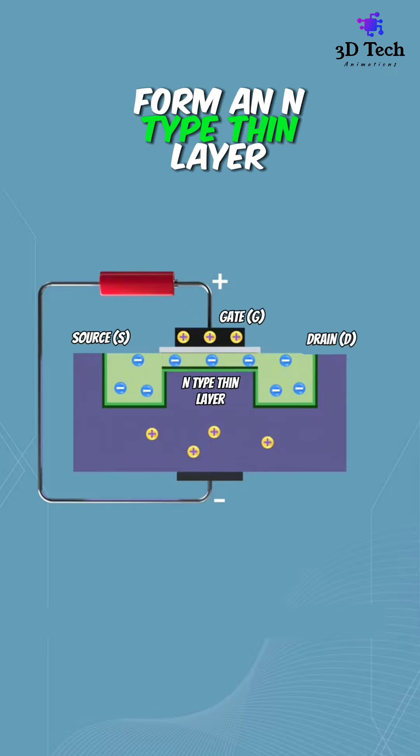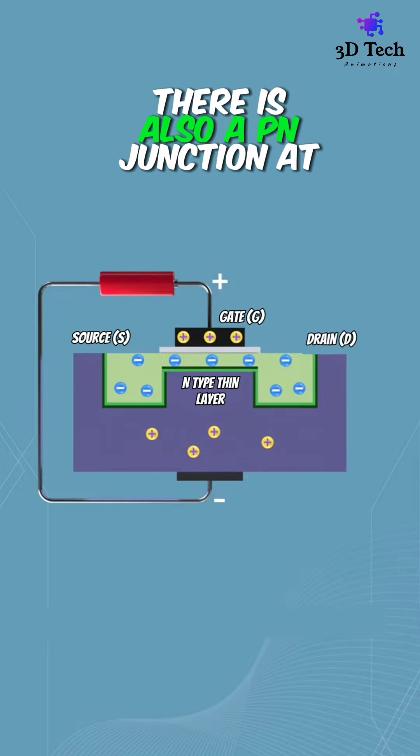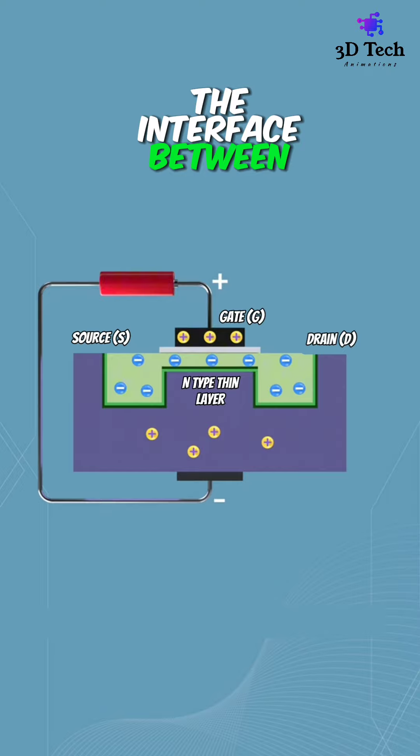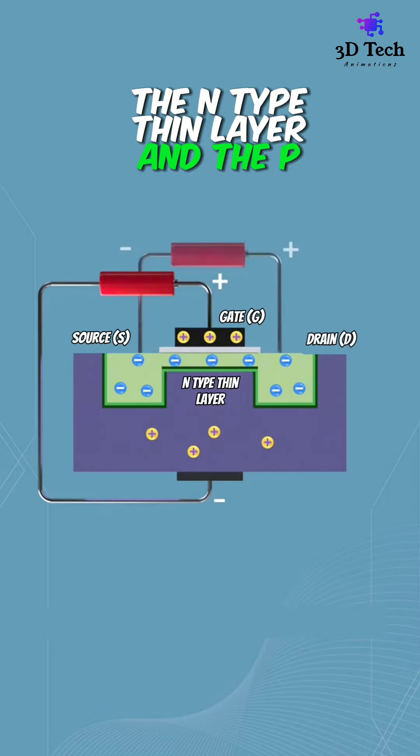This forms an N-type thin layer. There is also a P-N junction at the interface between the N-type thin layer and the P-type substrate.